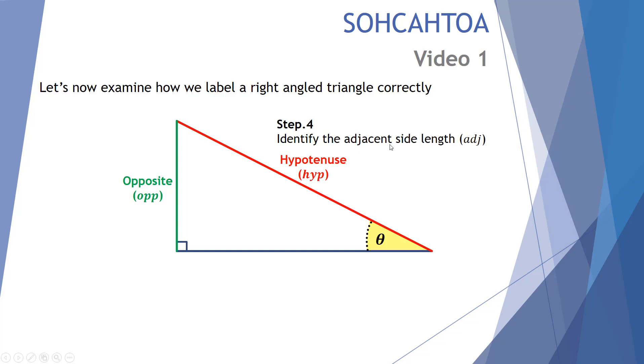And finally, identifying the adjacent side length. If we follow these procedures whereby we have the angle, we look for the opposite, we find the hypotenuse, the last and final remaining length is that of the adjacent side length. It's the final remaining, so it's colored in here purple.